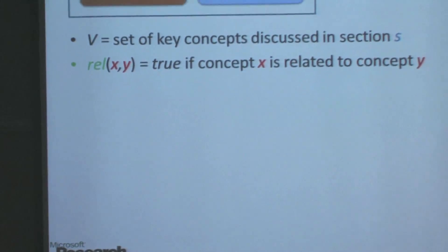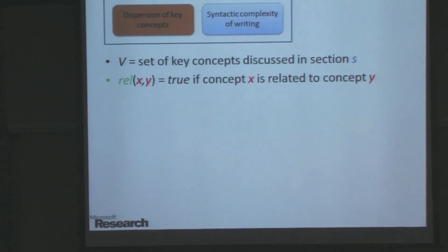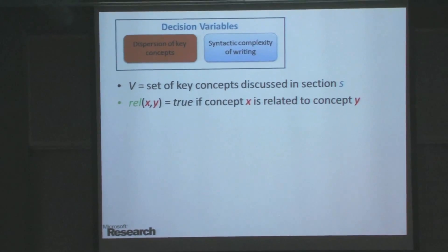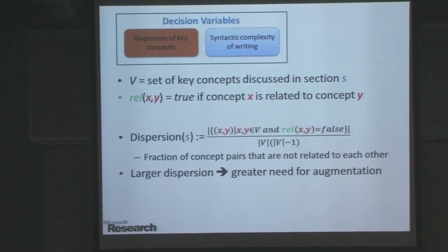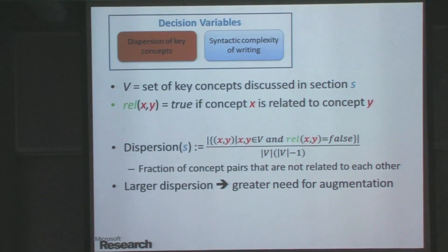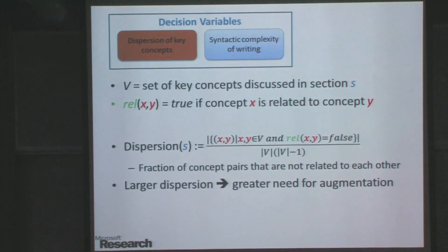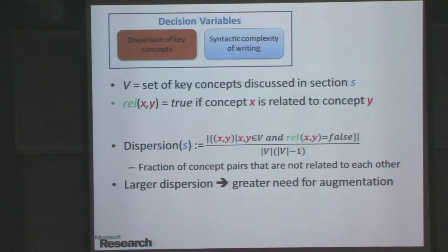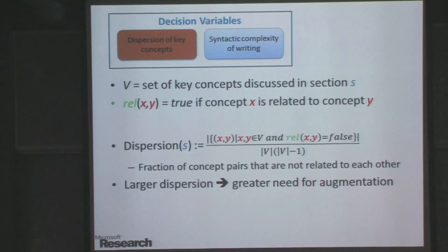Suppose we are given the set of concepts in a section and a relationship function that tells whether two concepts are related or not. We can define a notion of dispersion as the fraction of concepts that are not related to each other. The intuition is that if the text has a large dispersion, there is a greater need for augmenting such a textbook because it gets harder to understand.